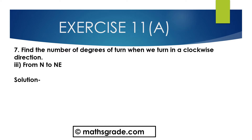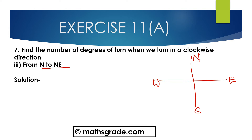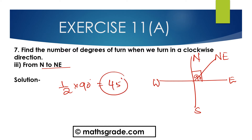Now question number 3: Find the number of degrees of turn when we turn in a clockwise direction from North to North East. This is North, East, South, West. From North to North East — between North and East, the direction is North East. Half of 90 degrees is 45 degrees. So North to North East is 45 degrees. The answer is 45 degrees.